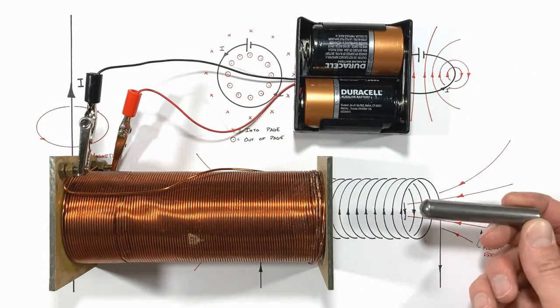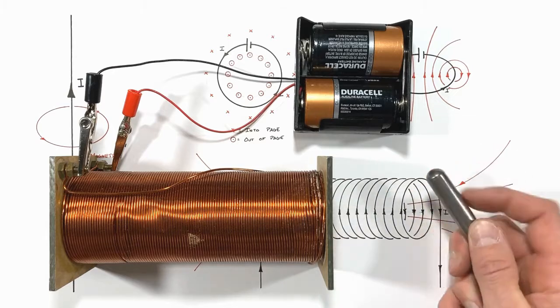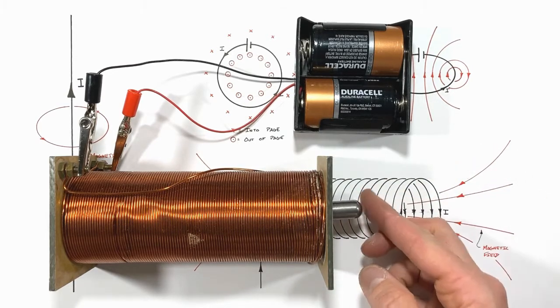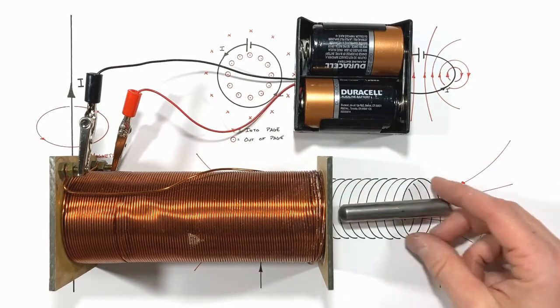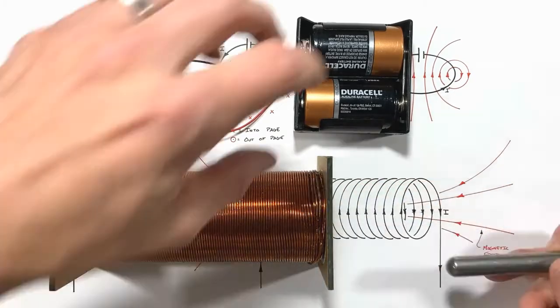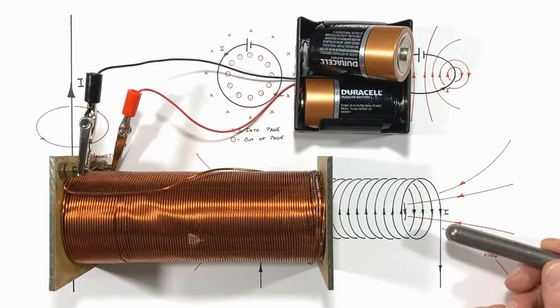If I was to take a permanent magnet and try to stick it in the end of this solenoid, you'll see the solenoid just pushes the magnet right back out. If I wanted to put the magnet in there and have it stay, all I would have to do is unplug the battery.